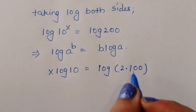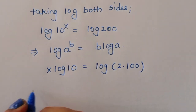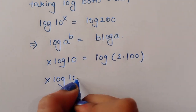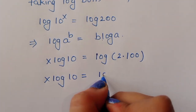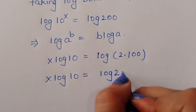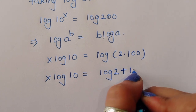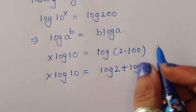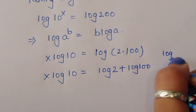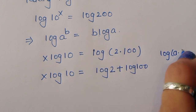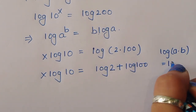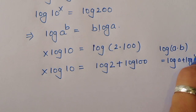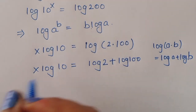We can write log(200) as log(2 × 100), which equals log(2) + log(100), using the formula log(a × b) = log(a) + log(b).